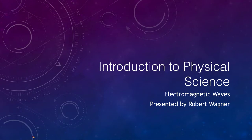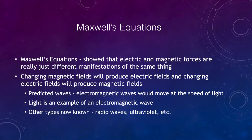Greetings and welcome to the introduction to physical science. In this lecture we are going to introduce the concept of electromagnetic waves, which is what we will be looking at in this unit. We want to get a little bit of an understanding of what these are and how they're produced. Basically, an electromagnetic wave is a form of light. We're used to visible light, but electromagnetic waves can be any form of light, as we'll look at when we talk about the electromagnetic spectrum.